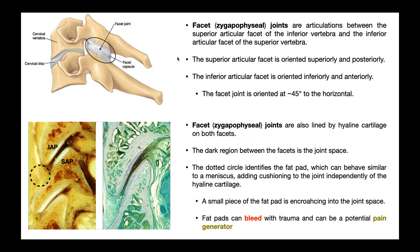The facet joints are lined by hyaline cartilage on both facets — both the superior and inferior articular processes have hyaline cartilage. Looking at this image, here's the inferior articular process of the vertebra above and the superior articular process of the vertebra below. In this picture on the left, the lighter region is actually hyaline cartilage — they stained it and it comes out a sort of purple in color. Hyaline cartilage, or articular cartilage, is one important characteristic of a synovial joint.